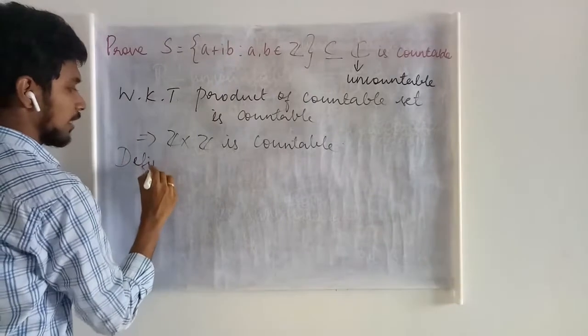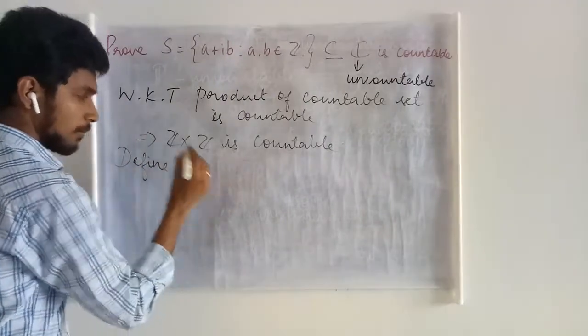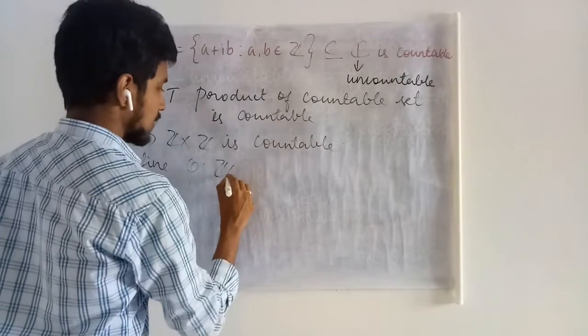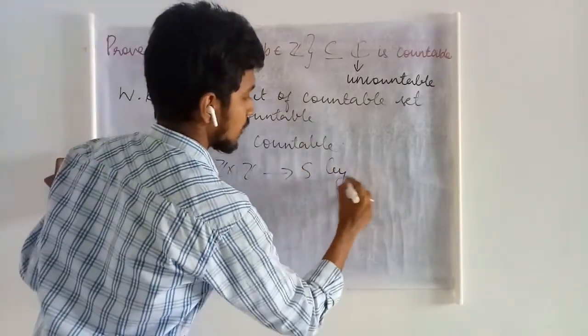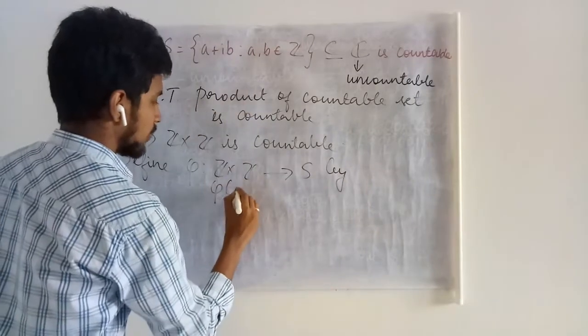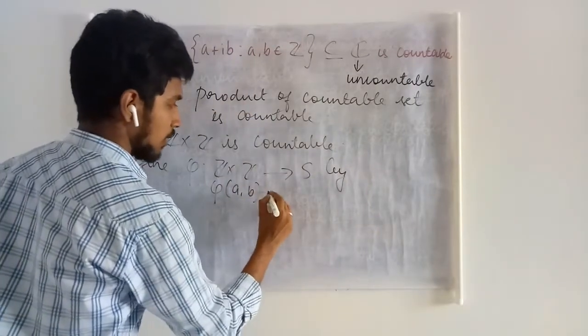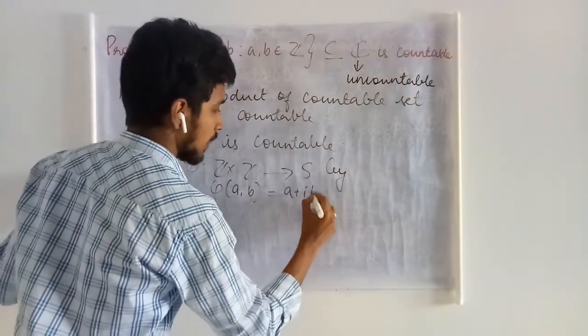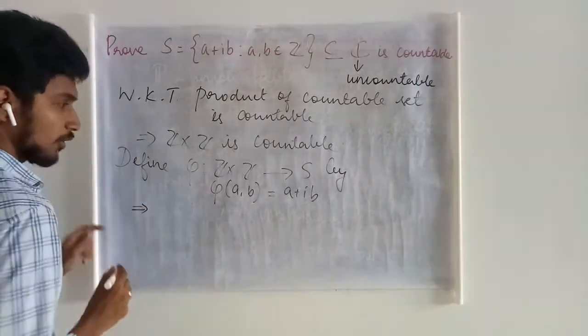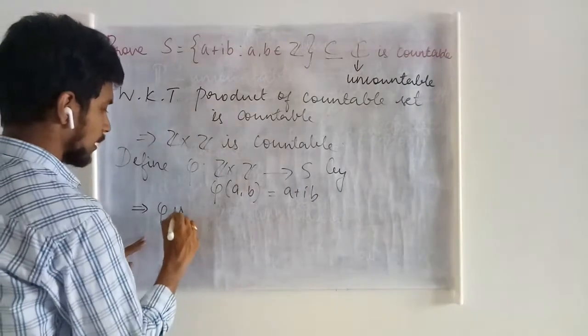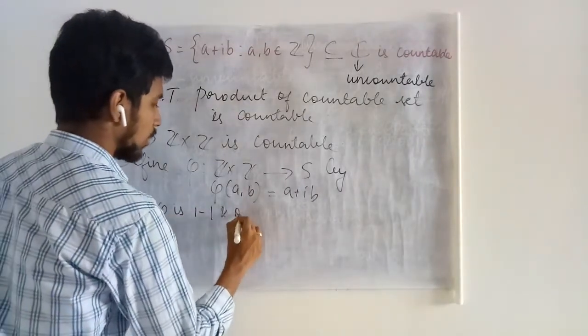Now let us define a map, some mapping φ from Z cross Z to this S by φ(A,B) is mapped to A plus iB. By the definition itself, you can see that this mapping is 1-1 and onto.